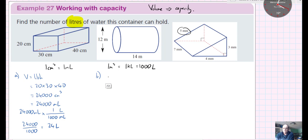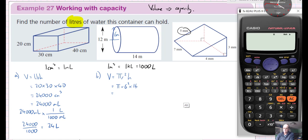So for part B, we've got a cylinder and the volume of a cylinder, V is equal to pi r squared times by h. But notice that we need the radius and we've actually got the diameter. So the radius here is just half of the diameter, so the radius is 6 meters.